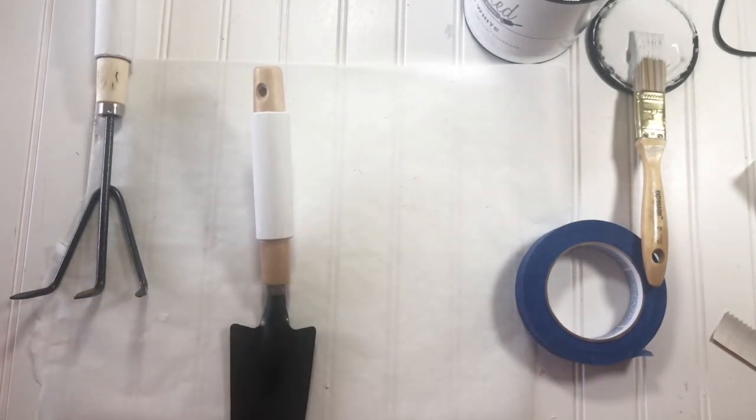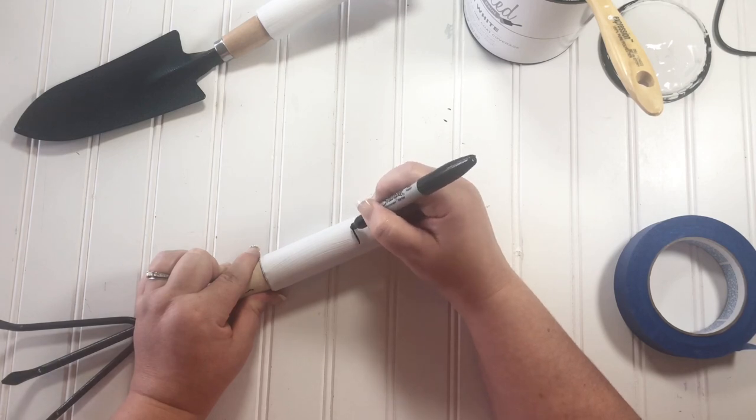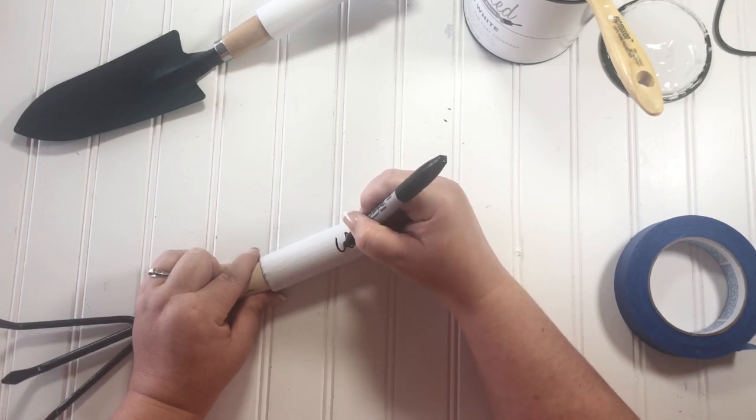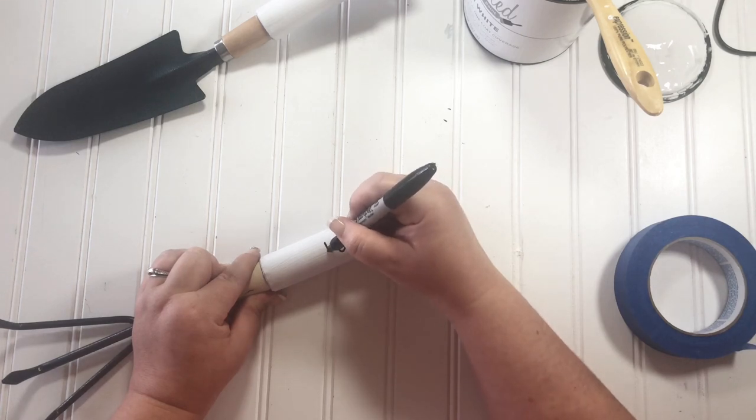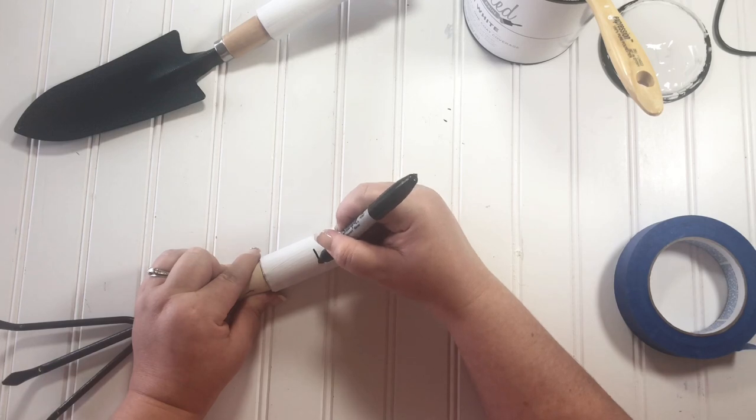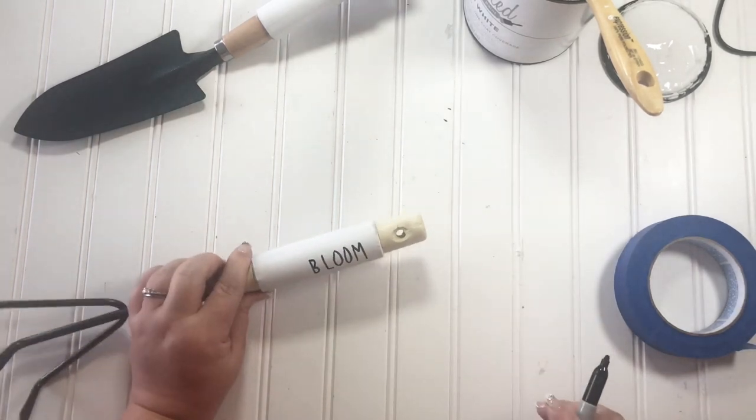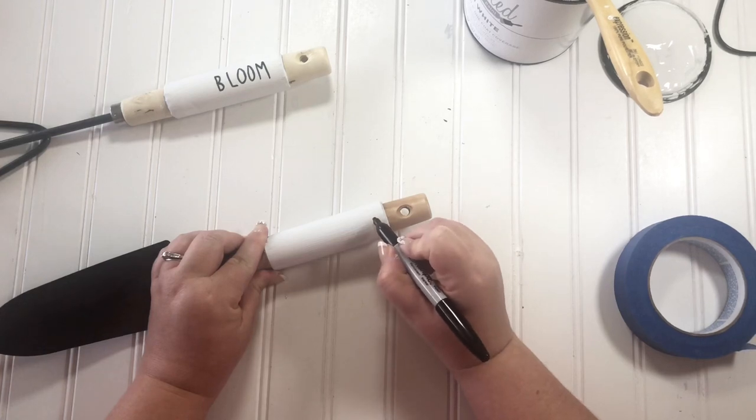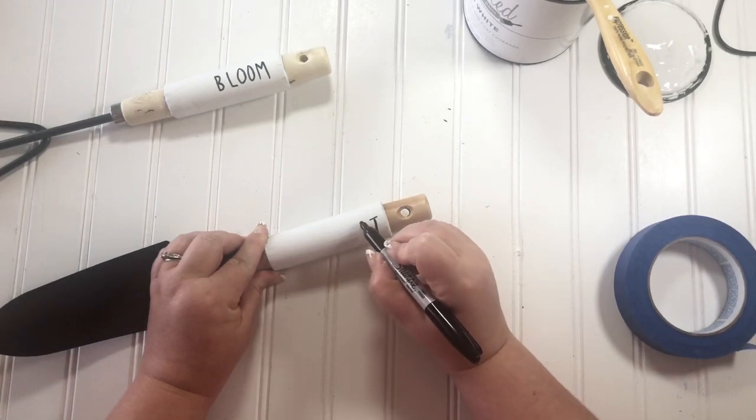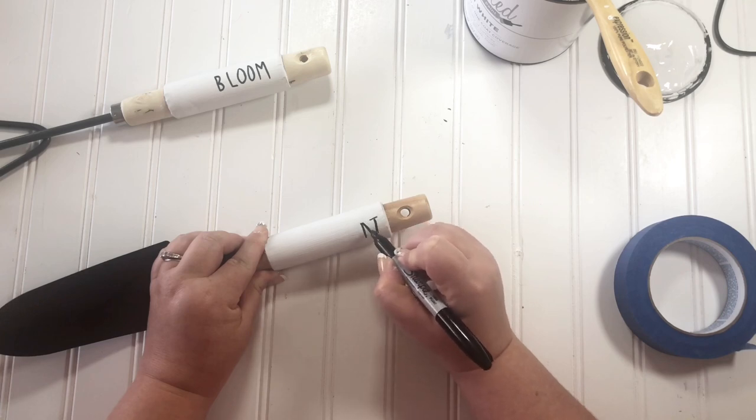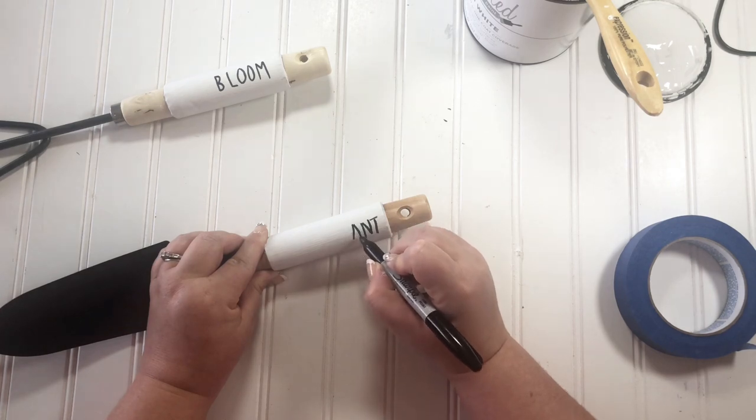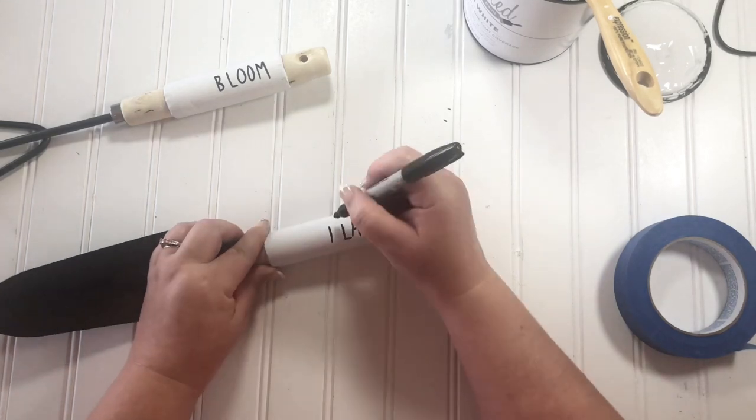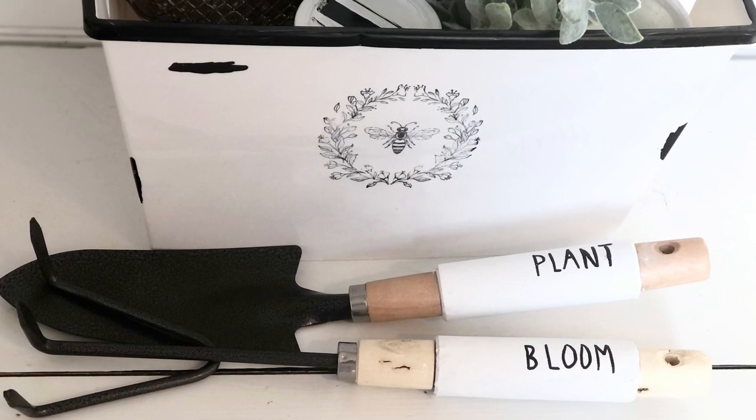Then I thought it would be really cute to put some words on these handles, and I'm just using a black Sharpie to do that. If you wanted to use your vinyl cutter to make some words that would be perfect, but I just wanted to be simple and not so complex, so I just wrote some words on these handles. My writing is not the best but I still think that they turned out very cute. And here's how the garden tools turned out.